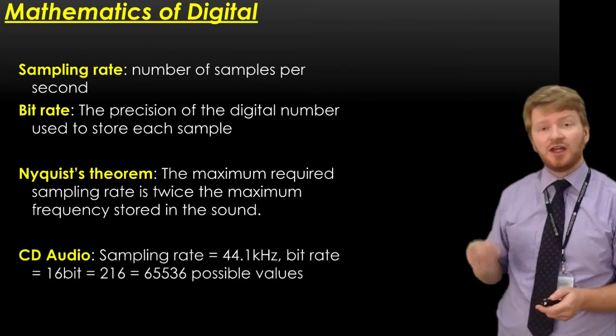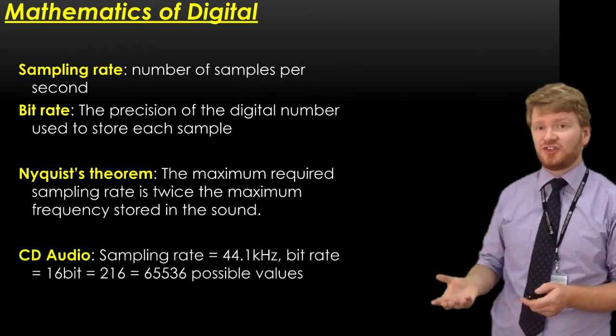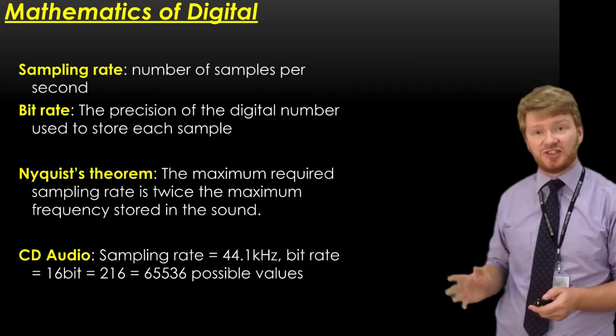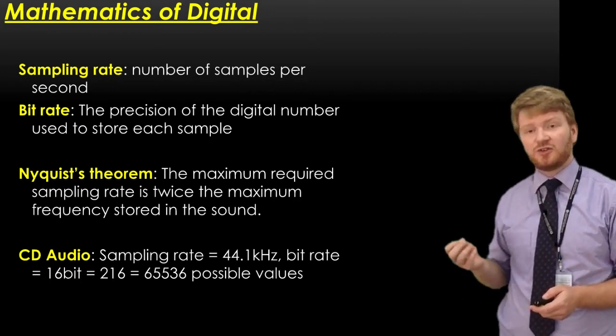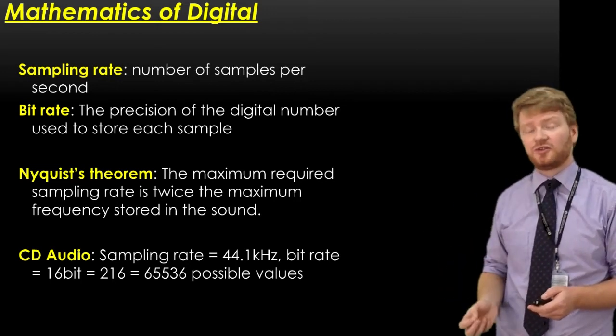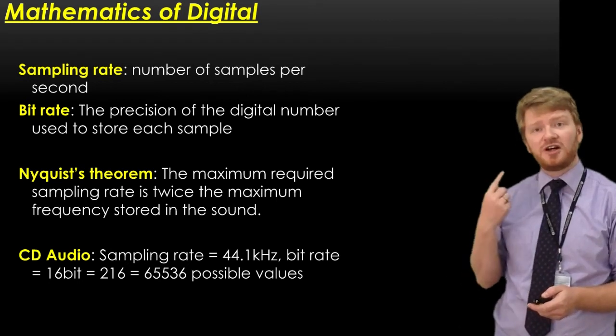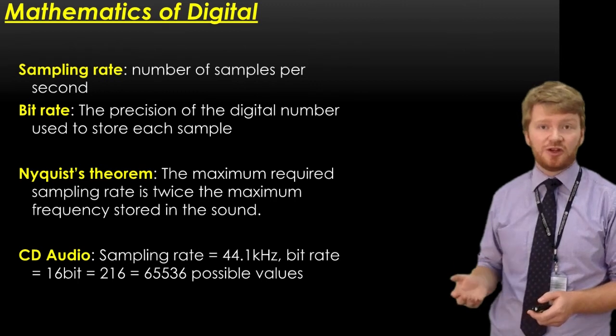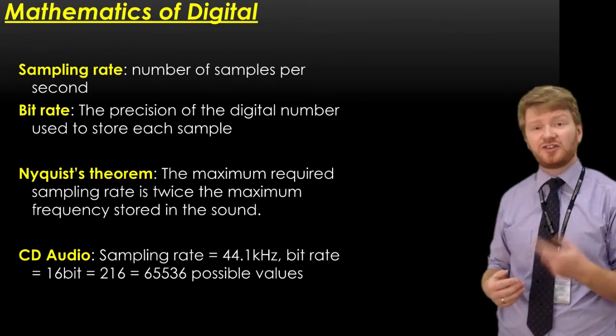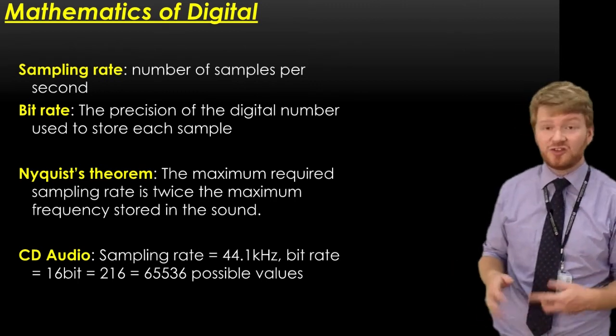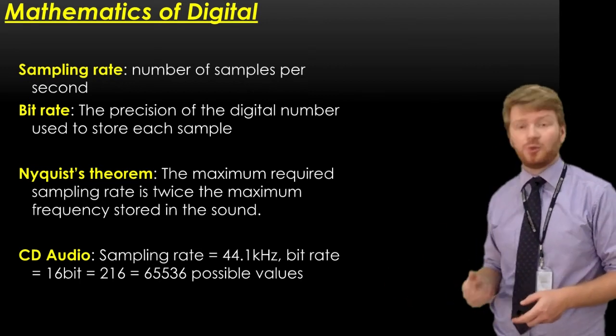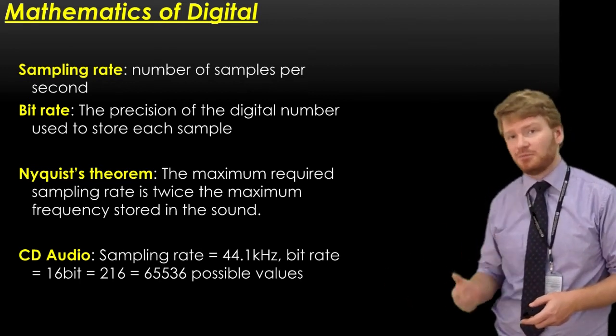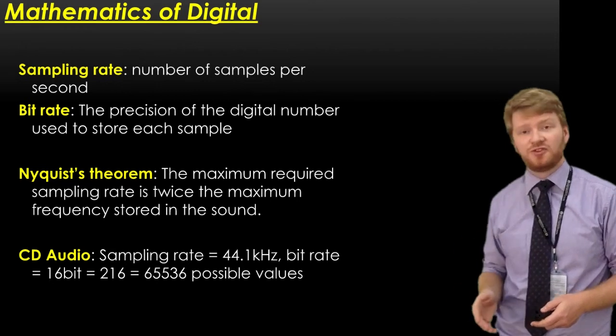To explain that, I'll use the example of a CD. In CD audio, because it's digitally sampled, the sampling rate is 44.1 kHz. That should make sense because the highest frequency humans can hear is 20 kHz. If I double it, I get about 40 kHz. For technical reasons, 44.1 kHz was chosen as the maximum sample rate for a CD.